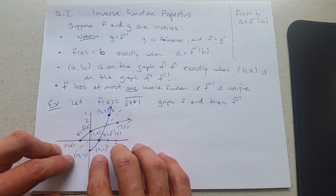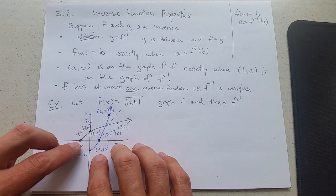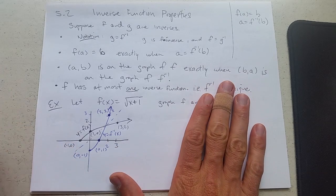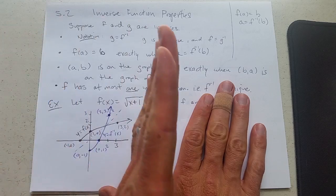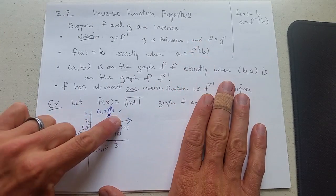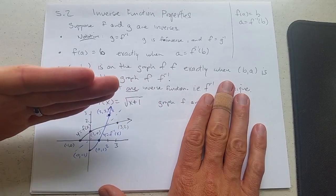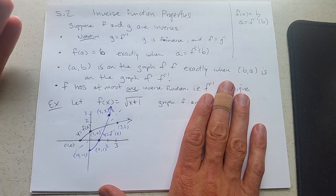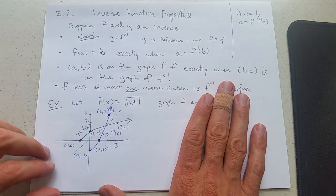One other thing to notice. All function graphs have to pass the vertical line test. When you reflect a vertical line, you get a horizontal line. So if you're going to have an inverse function, you need to pass the horizontal line test.